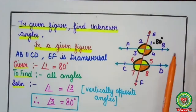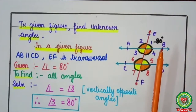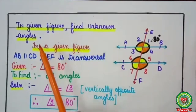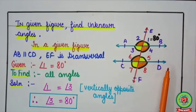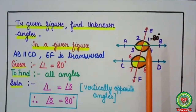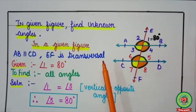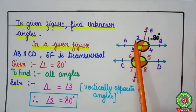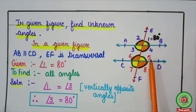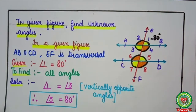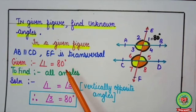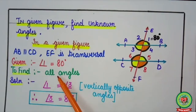Here in this figure, this angle is 80 degrees. So in the given figure, find the unknown angles. In the given figure, AB is parallel to CD and EF is the transversal. Next step is the marking of angles: 1, 2, 3, 4, 5, 6, 7, 8. We have to find out all the angles.